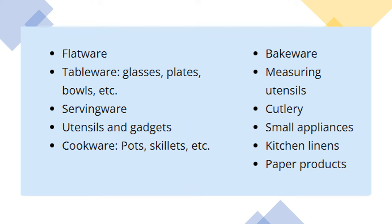These categories are: flatware; tableware such as glasses, plates, and bowls; servingware; utensils and gadgets; cookware such as pots and skillets; bakeware; measuring utensils; cutlery; small appliances; kitchen linens; and paper products.